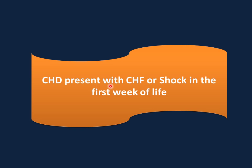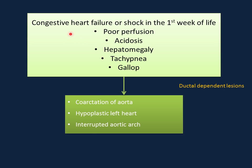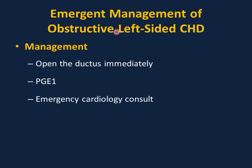Congenital heart defects presenting with congestive heart failure or shock in the first week of life — the classic presentation includes poor perfusion, unexplained metabolic acidosis, hepatomegaly, tachypnea, or gallop. The differential diagnosis includes coarctation of aorta (usually severe), hypoplastic left heart, and interrupted aortic arch. These are ductal-dependent lesions. Emergent management of obstructive left-sided congenital heart defects requires keeping the ductus open by giving prostaglandin immediately and obtaining emergency cardiology consult.